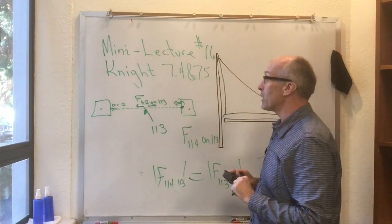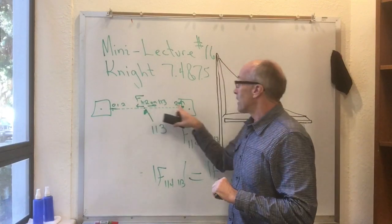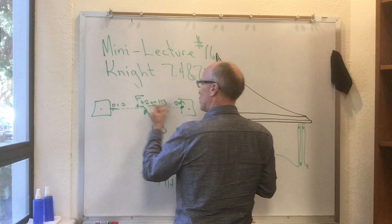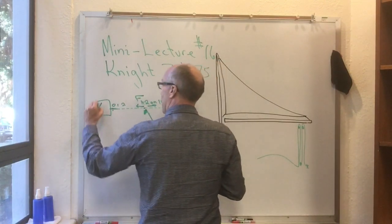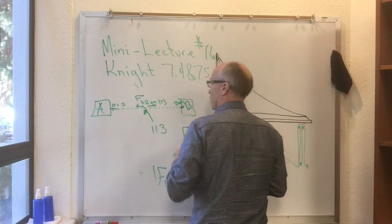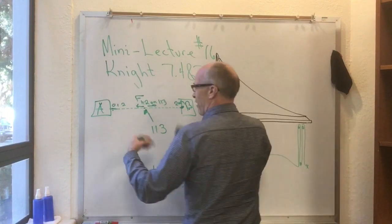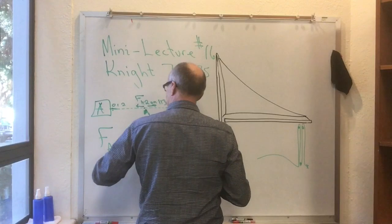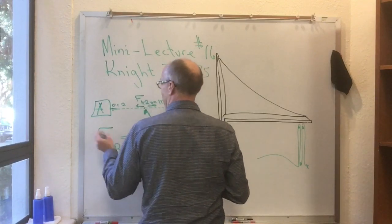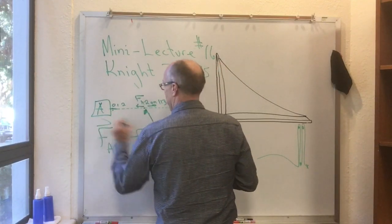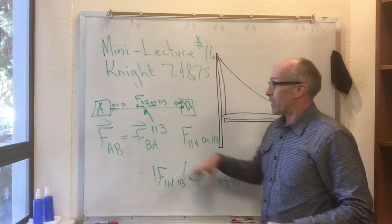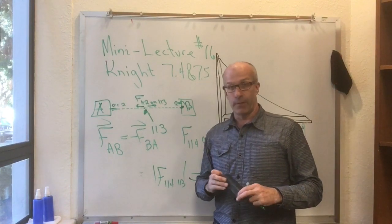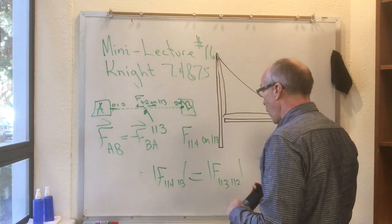In other words, the string transmits the tension perfectly, and you end up with a situation where even though this block here is A and this block here is B, even though they're not in direct contact, it is as if FAB is minus FBA, almost as if we've got another kind of version of Newton's third law, but it's because the thing that's connecting to them is perfectly transmitting the force.